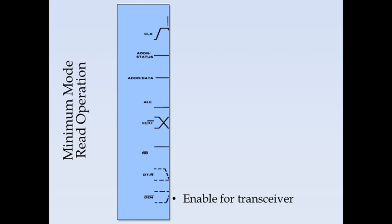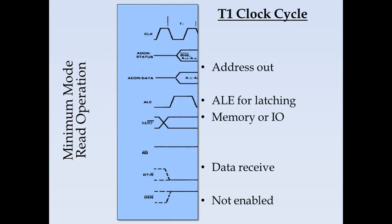During the T1 clock cycle, the address is provided on the higher-order address lines and the multiplexed address/data lines. The ALE signal is given to latch this address. These three signals are active during this cycle. If it is a memory operation, the M/IO line is high; if it is an I/O operation, it is low.